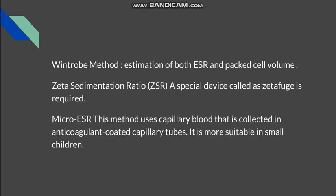Other methods: Wintrobe's method is used when we need to determine both ESR and PCV. The zeta sedimentation ratio uses a machine known as a ZetaFuge. Micro-ESR is used only in cases of children or where there is limited blood to work with — it uses capillary blood and very small capillary tubes.